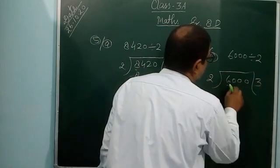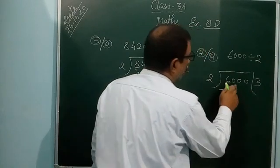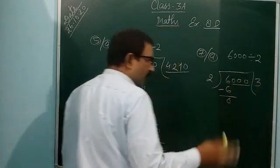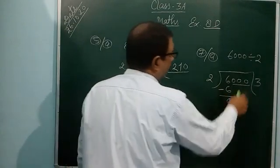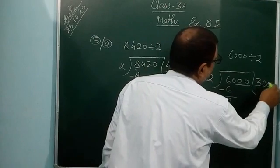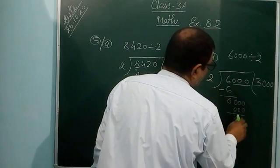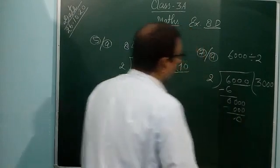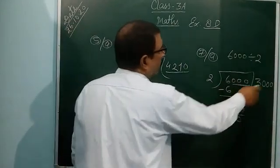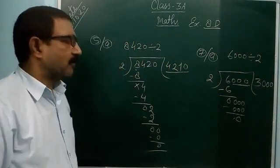6 is in the table of 2: 2×3=6, so 6 minus 6 is 0. There are three zeros after the 6, so you write 3 zeros here as well — that gives 3000. You can also do it digit by digit, bringing down each zero one at a time. Each time the remainder is 0. Either method is correct — the answer is 3000.